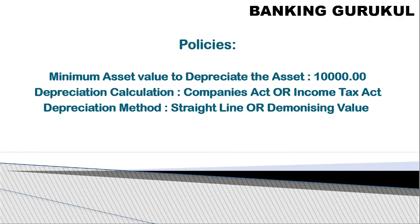In company policies, we first define the minimum amount for which we'll calculate depreciation. Depreciation means we are decreasing the fair value of the asset. For example, if today I purchase a car for 10 lakhs, next year the car value will decrease — it may be 9 lakhs, 8 lakhs, or 7 lakhs. We have to reduce the asset value and book the depreciation expense: 2 lakhs will be debited and the asset will be credited 2 lakhs, decreasing the asset value from 10 lakhs to 8 lakhs.